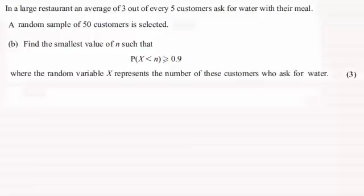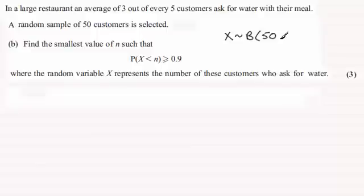Okay, so welcome back if you had a go. Now first of all, the random variable X follows a binomial distribution because we've got a finite number of trials — 50 — and someone can either want water or not want water, and the probability they want water is 3 fifths, or 0.6.